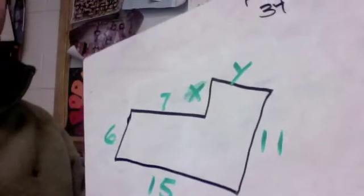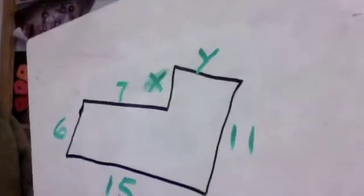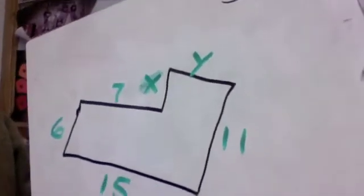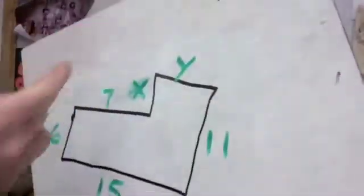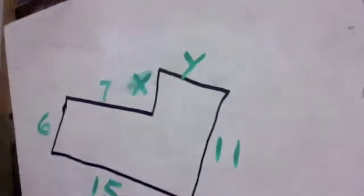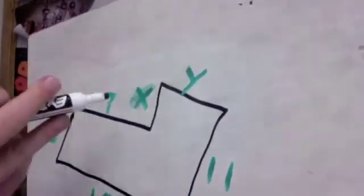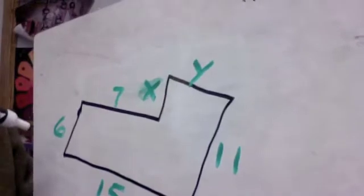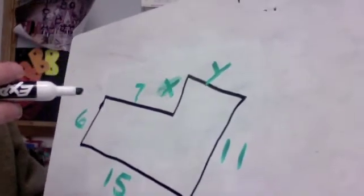All right, again we are missing a couple of sides here. I just changed it up, I just labeled them x and y. It's no different here. We still need all of the sides to figure out what the perimeter is. So we need to figure out what x and y is.